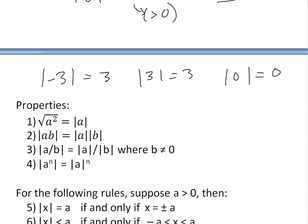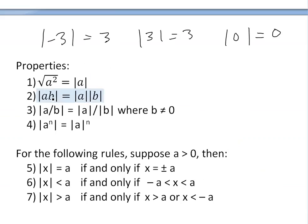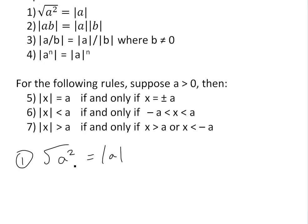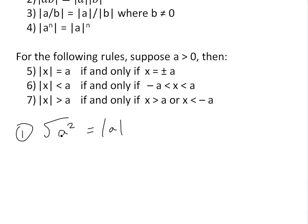So now let's look at some properties. I have a list of seven properties here; we'll look at each one step by step. The first one is: the square root of A squared is equal to the absolute value of A.